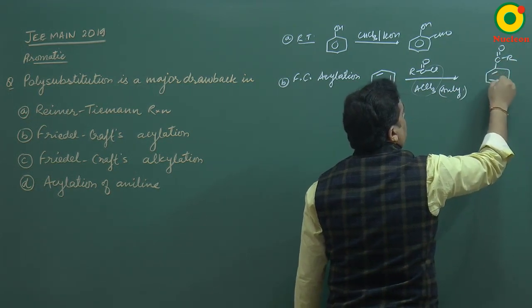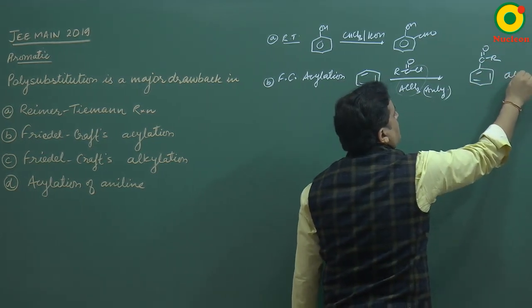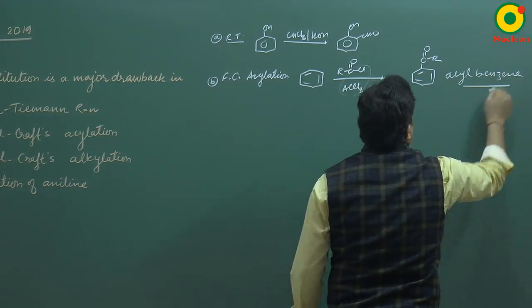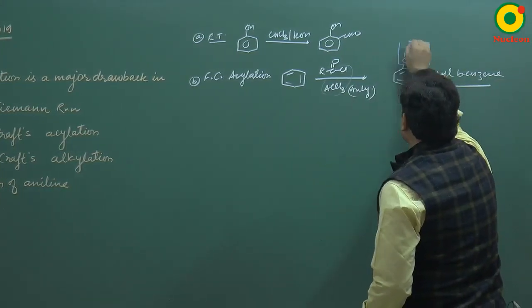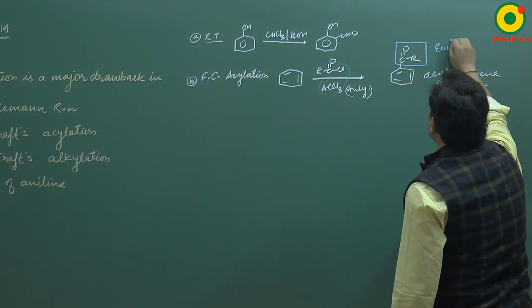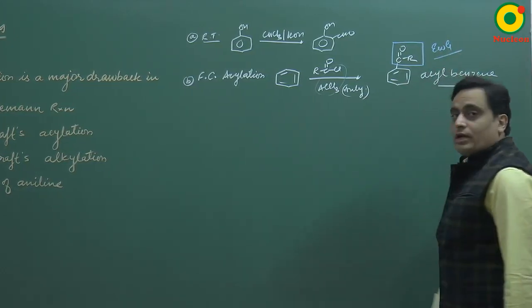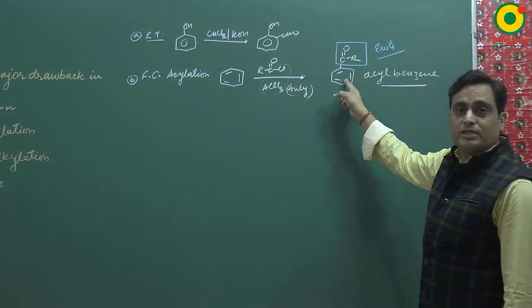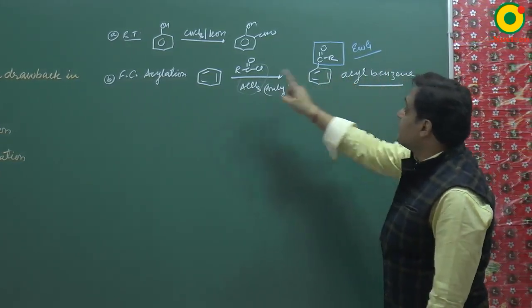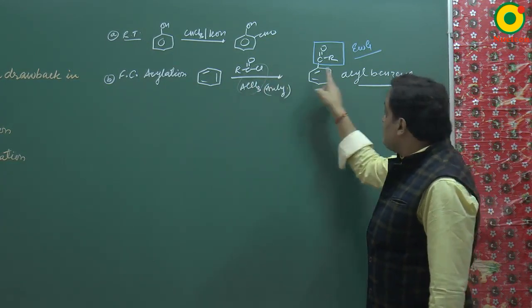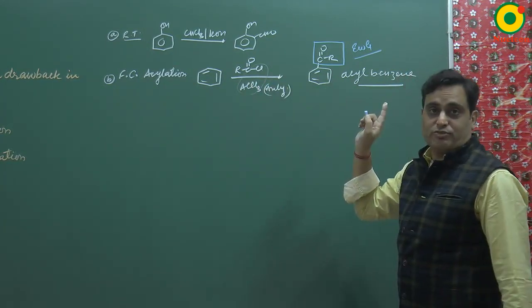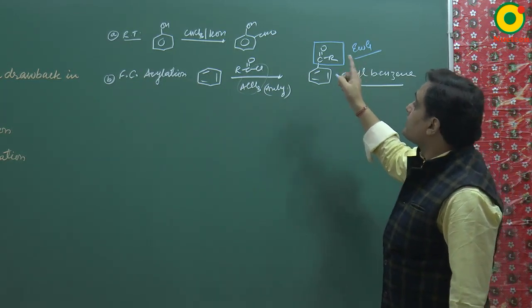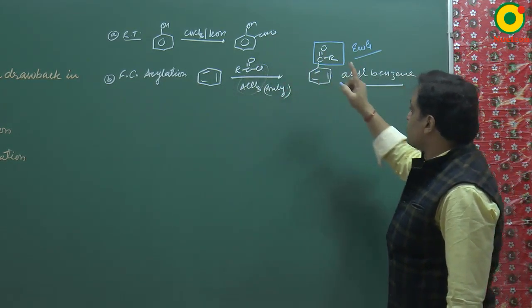This is acylbenzene. Acylbenzene is made. The acyl group is an electron withdrawing group, which means it deactivates the benzene ring, and there is no further Friedel-Crafts acylation. So the problem of polysubstitution is not in this case.